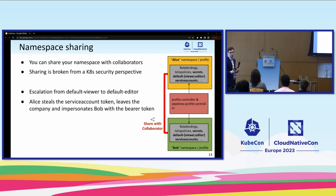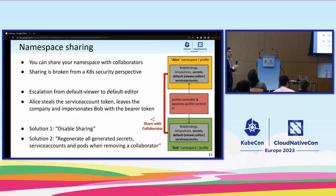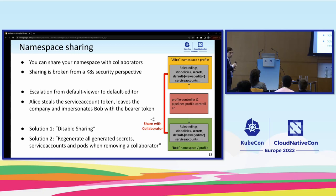What can we do against this? For example, we can just disable sharing altogether — this is what some companies do. There is also a second solution: actually deleting and regenerating all of these secrets and tokens. Neither of this is implemented yet upstream, so please take care at your companies. This is a problem if you leave namespace sharing enabled by default.